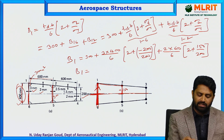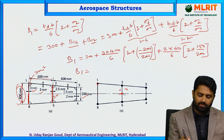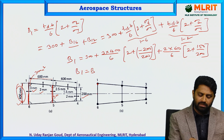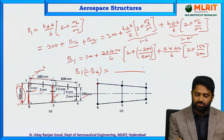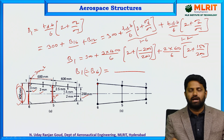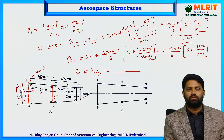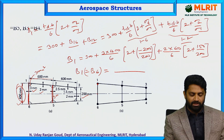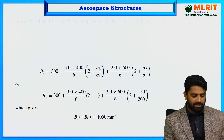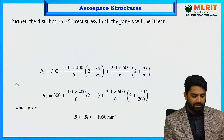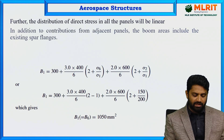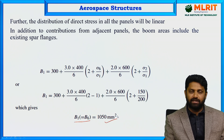The boom area calculated for B1 is equivalent to B6 by symmetry. Therefore, B1 = B6 = 1050 mm².